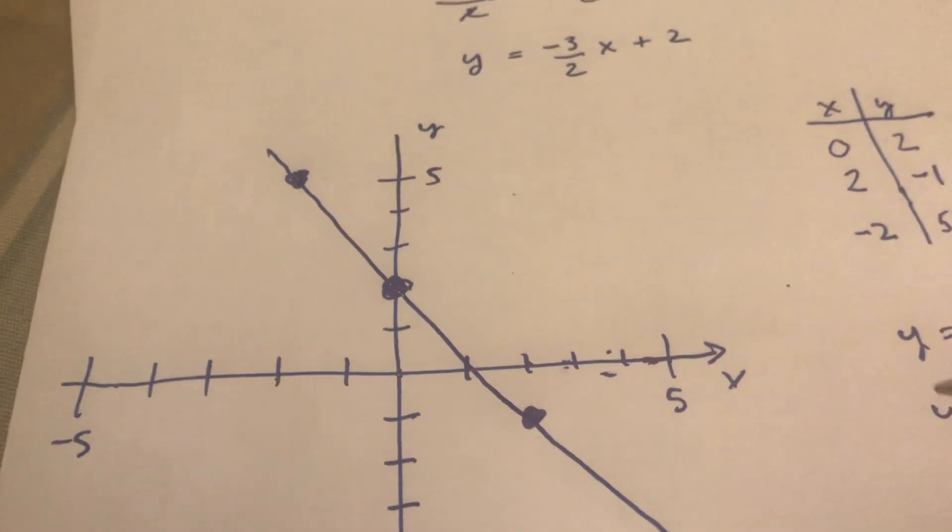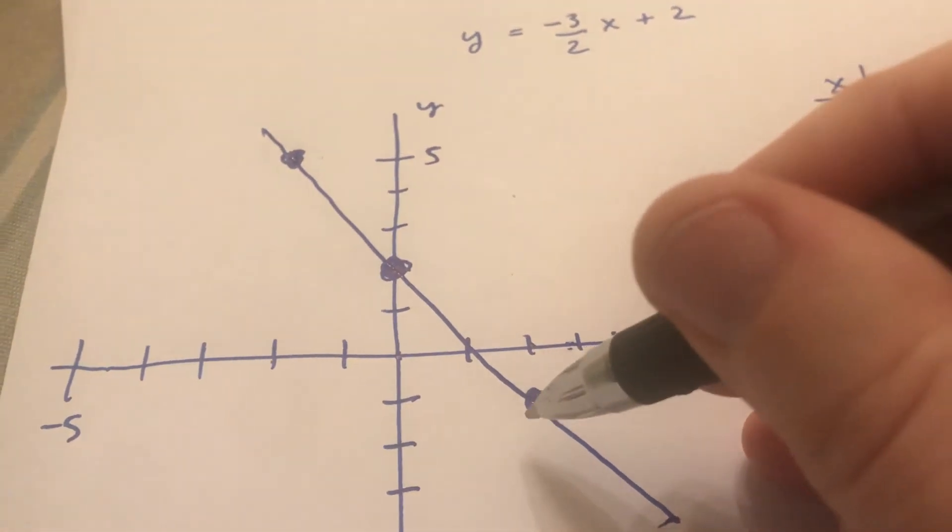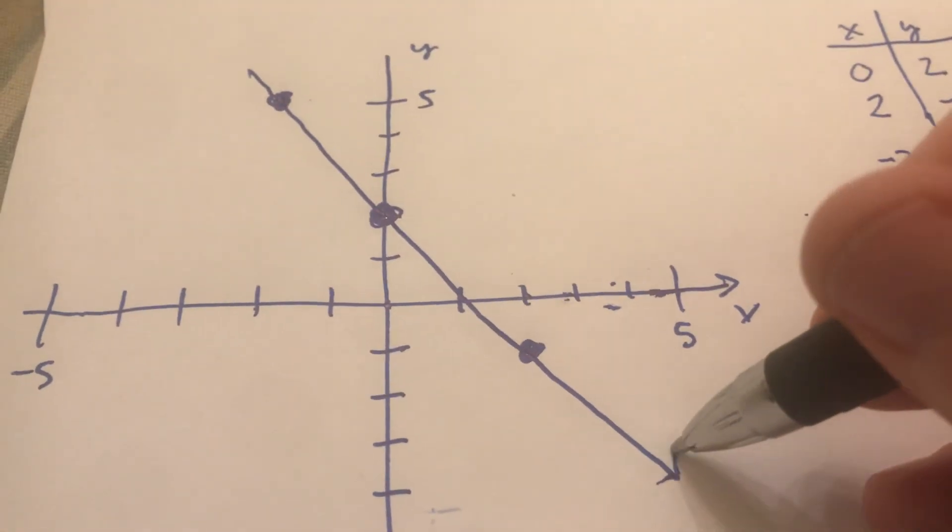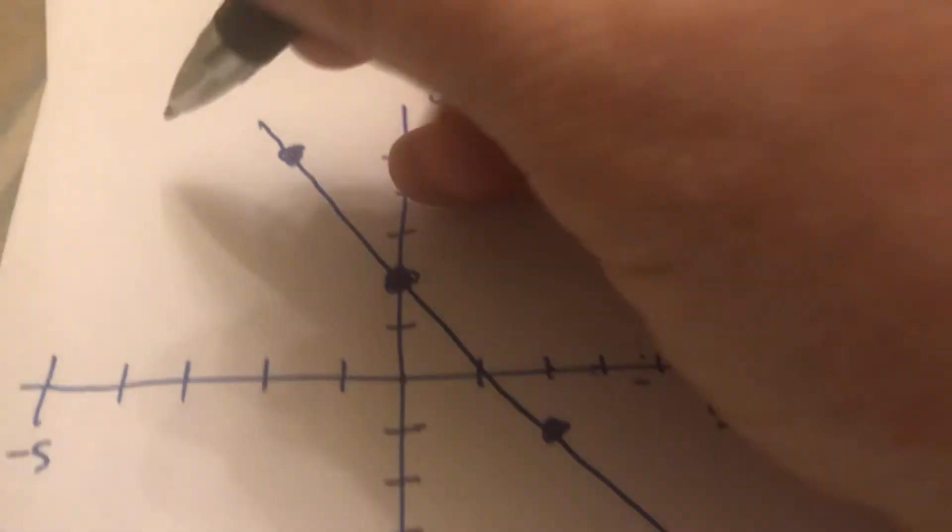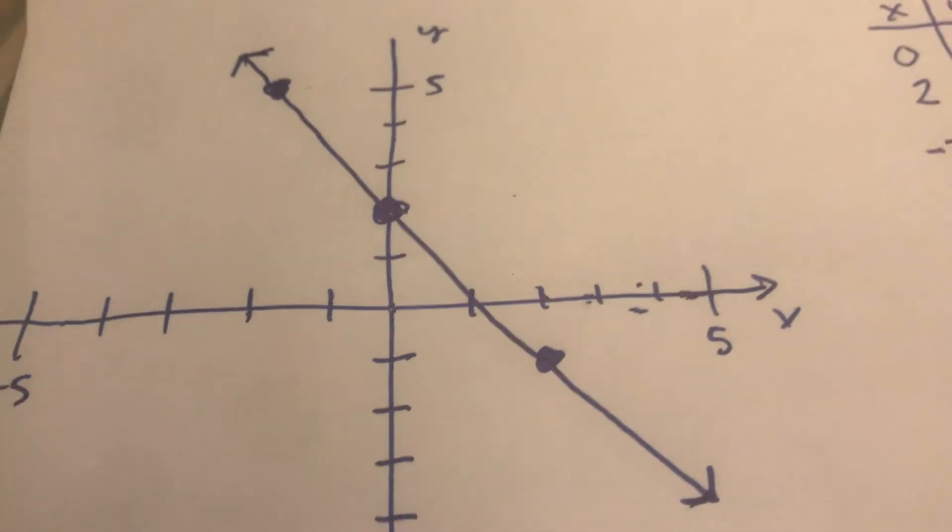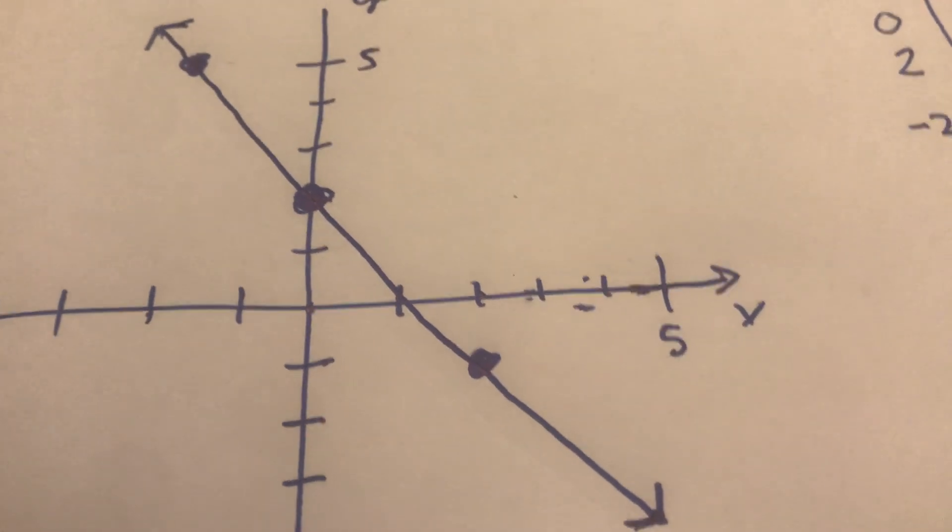And that's the answer. Now don't end your lines at the dots. The lines go on forever and ever. So some people represent that - some teachers make you put an arrow at the end. I'm not gonna make you do that. But it's not a bad idea. Bye.